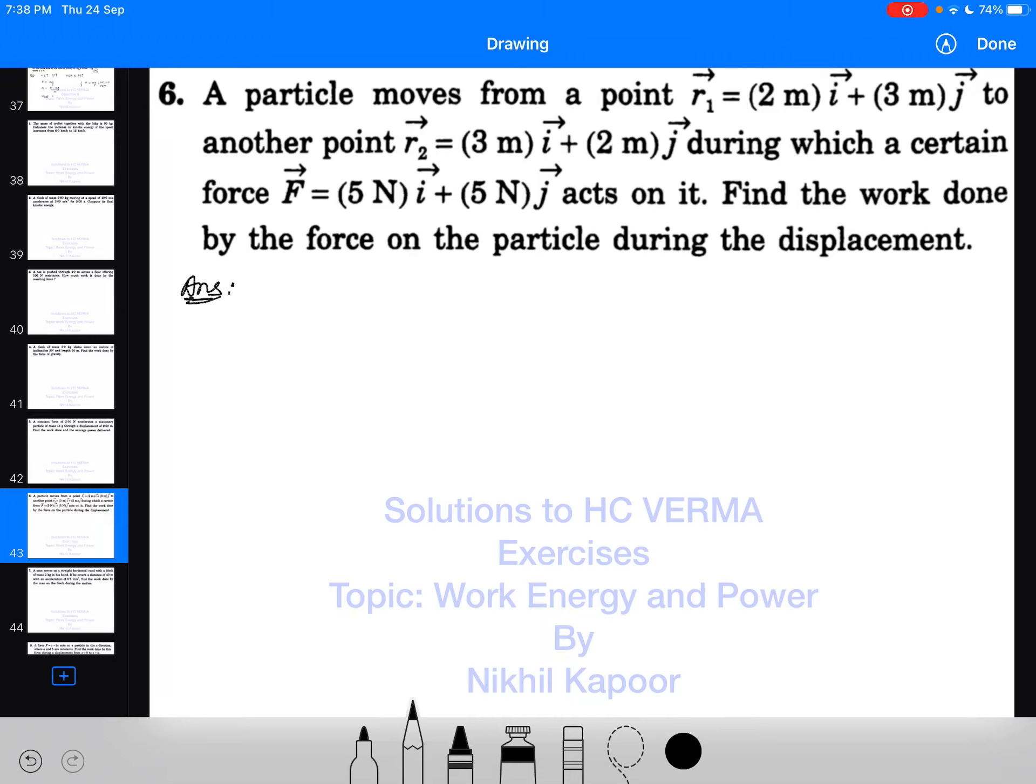The sixth example from the exercises: a particle moves from initial position vector r1 = 2i + 3j to final position vector r2. So I must find the displacement vector, which is equal to final position minus initial position.